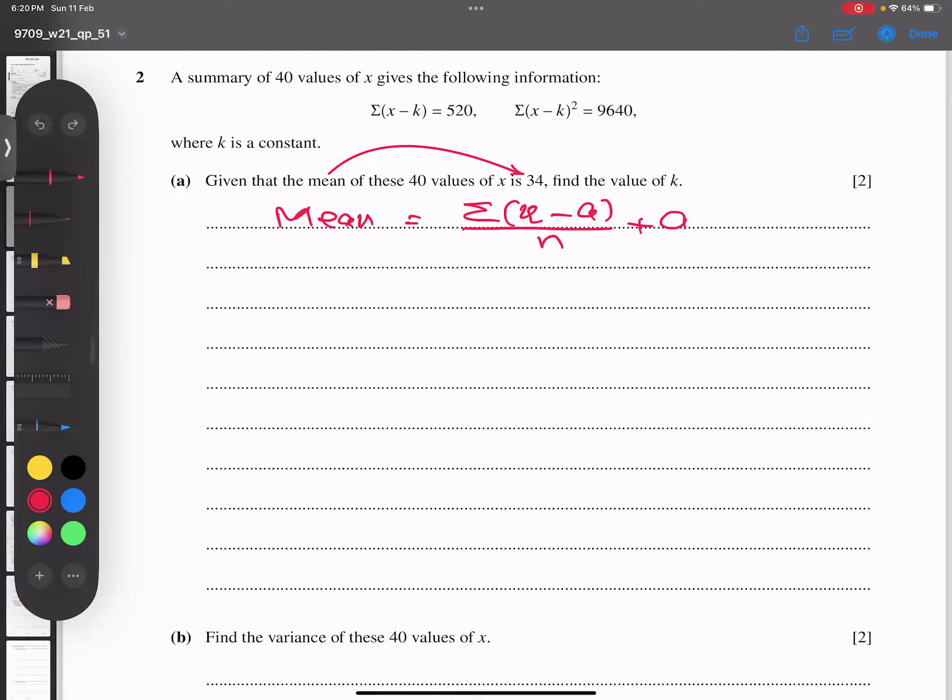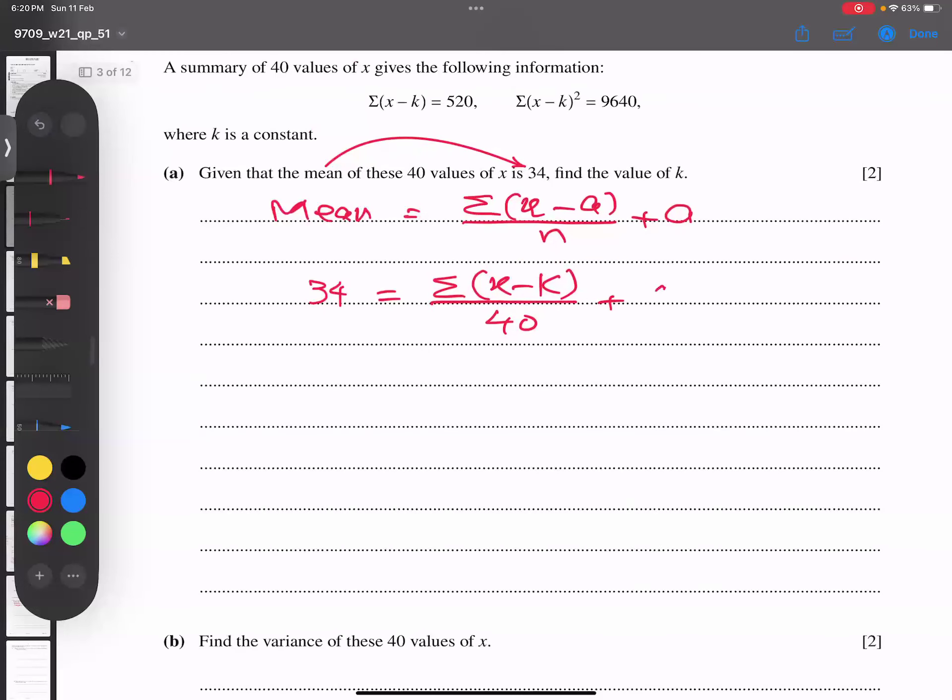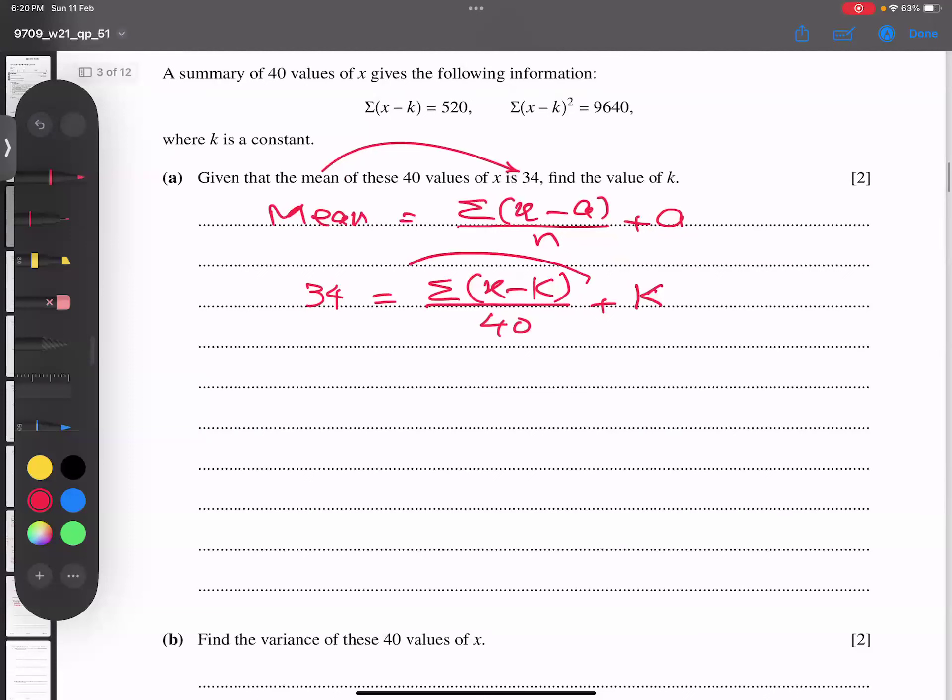Let me copy everything the same. The mean value is 34. So mean equals sigma x minus k by n. The n value is given as 40. This is k. So 34 equals 520 over 40 plus k.